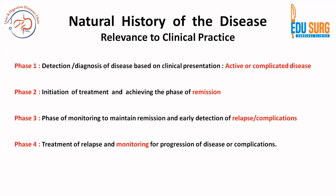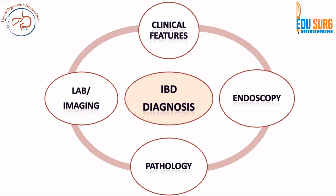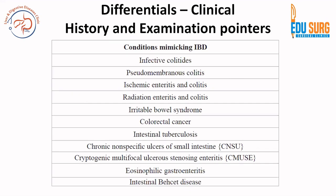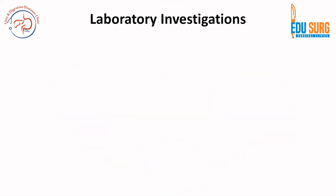Just to recap, we have seen the phases of IBD and the natural history of disease. We are on phase 1, that is detection and diagnosis of disease. We have extensively studied the first pillar of IBD diagnosis — clinical features — in the previous video, including differentials based on clinical history and key points in history and examination. Now we will go into the second pillar: laboratory investigations and imaging.